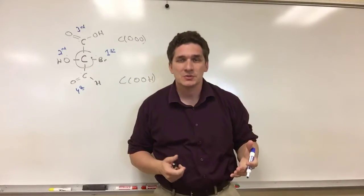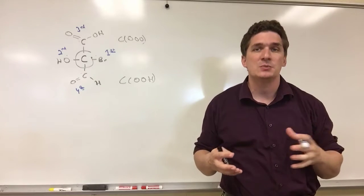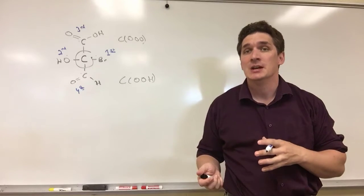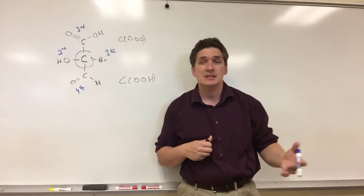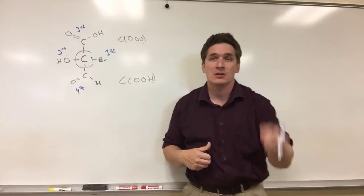So this is how this system works. What we're trying to do is we're trying to create a way of prioritizing groups, basically ranking the groups in such a way that we can start assigning geometries. For alkenes, it'll be E/Z, and for the chiral centers, this will be the R/S.